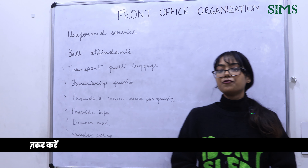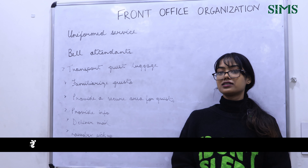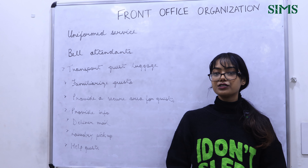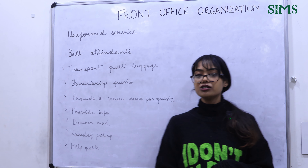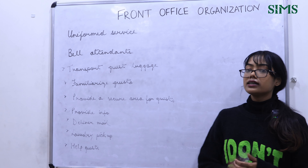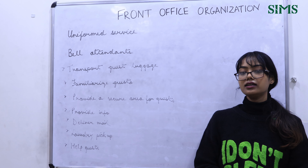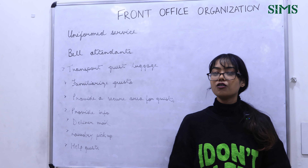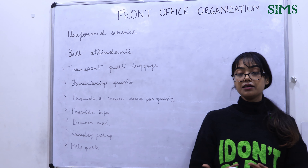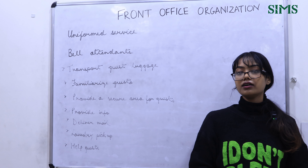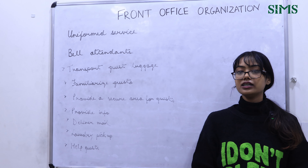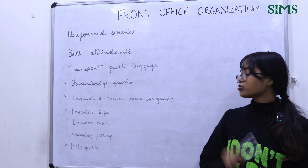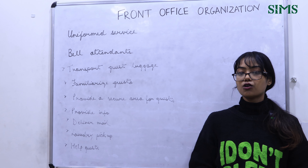In uniform services, bell attendants are responsible for providing baggage service to guests from the lobby to their rooms. Their functions include transporting guest luggage from their vehicle to their room and during any room changes, familiarizing guests with safety information, providing a secure area for temporary luggage storage, delivering mail and parcels, and doing laundry pickup and delivery.